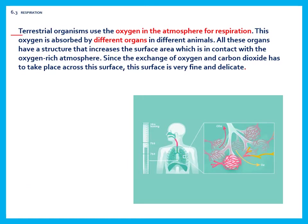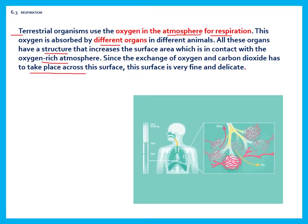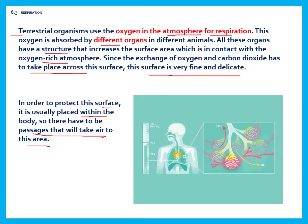Terrestrial organisms use the oxygen in the atmosphere for respiration. Different animals absorb this oxygen through different organs. All these organs have a structure that increases the surface area in contact with the oxygen-rich atmosphere. Since the exchange of oxygen and carbon dioxide takes place across this surface, it is very fine and delicate. To protect this surface, it is usually placed within the body, and so there have to be passages that take air to this area.